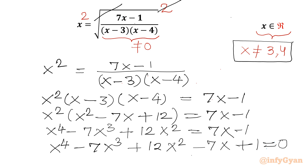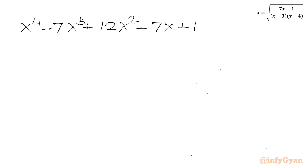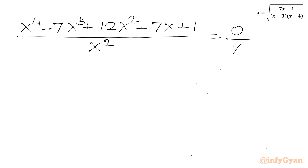This is a degree-4 equation, so I will use the fundamentals of reciprocal equations. For this, I have to make sure x cannot be 0. Now I will divide this equation by x squared on both sides, giving: x squared minus 7x plus 12 minus 7 over x plus 1 over x squared equals 0.